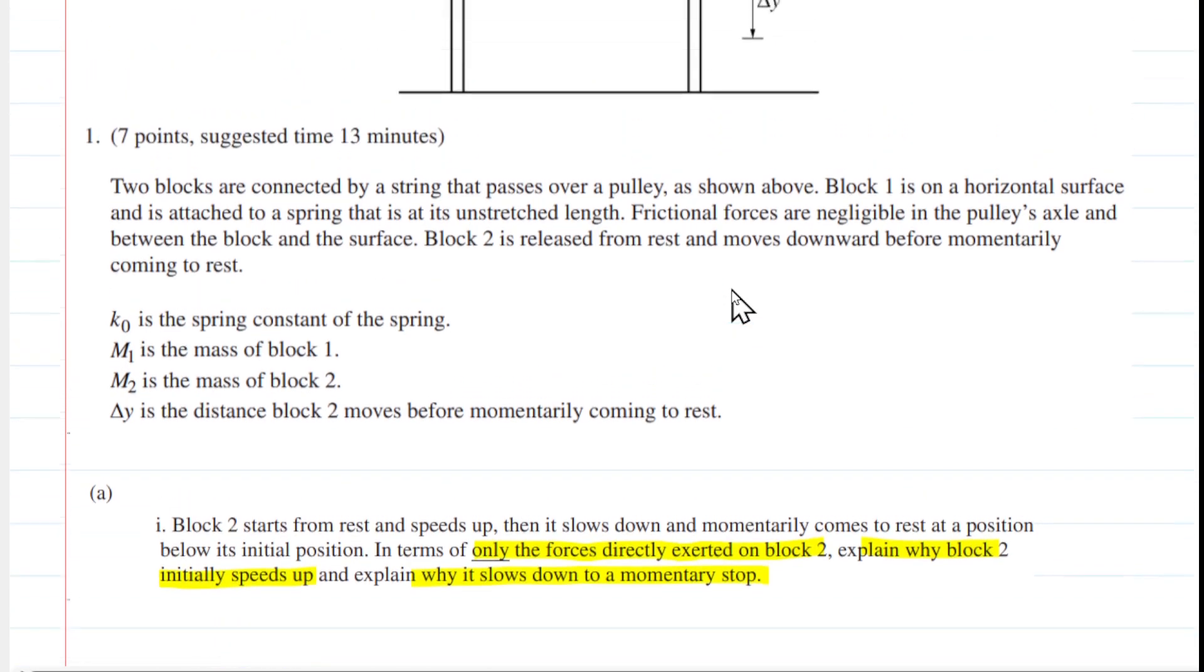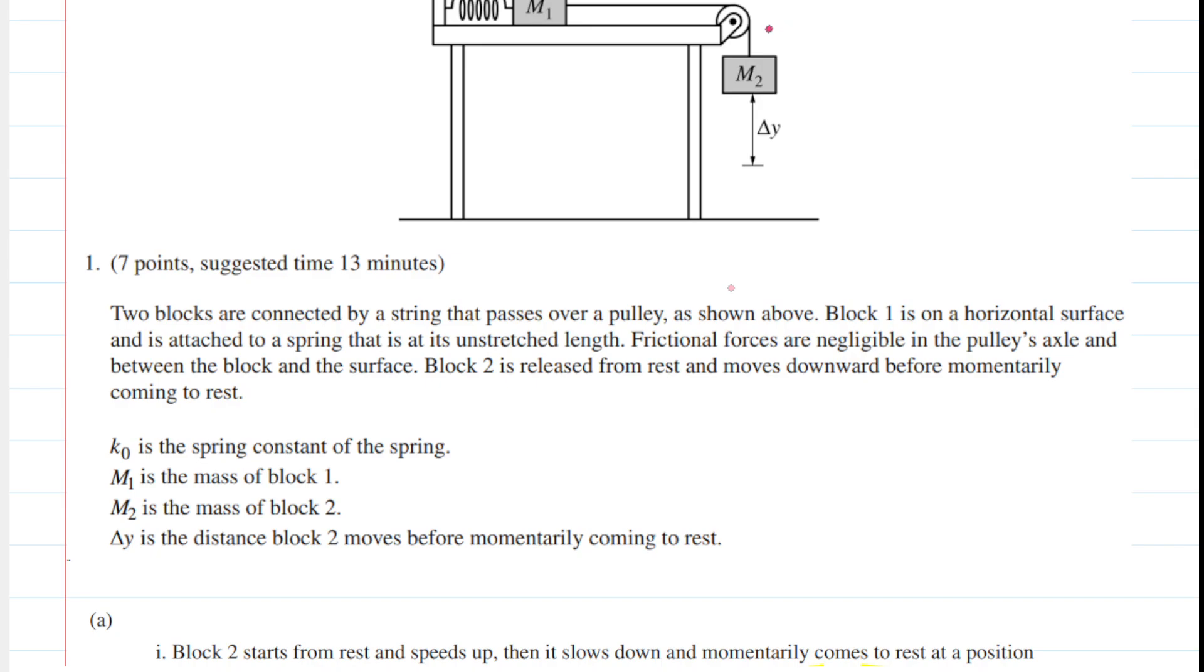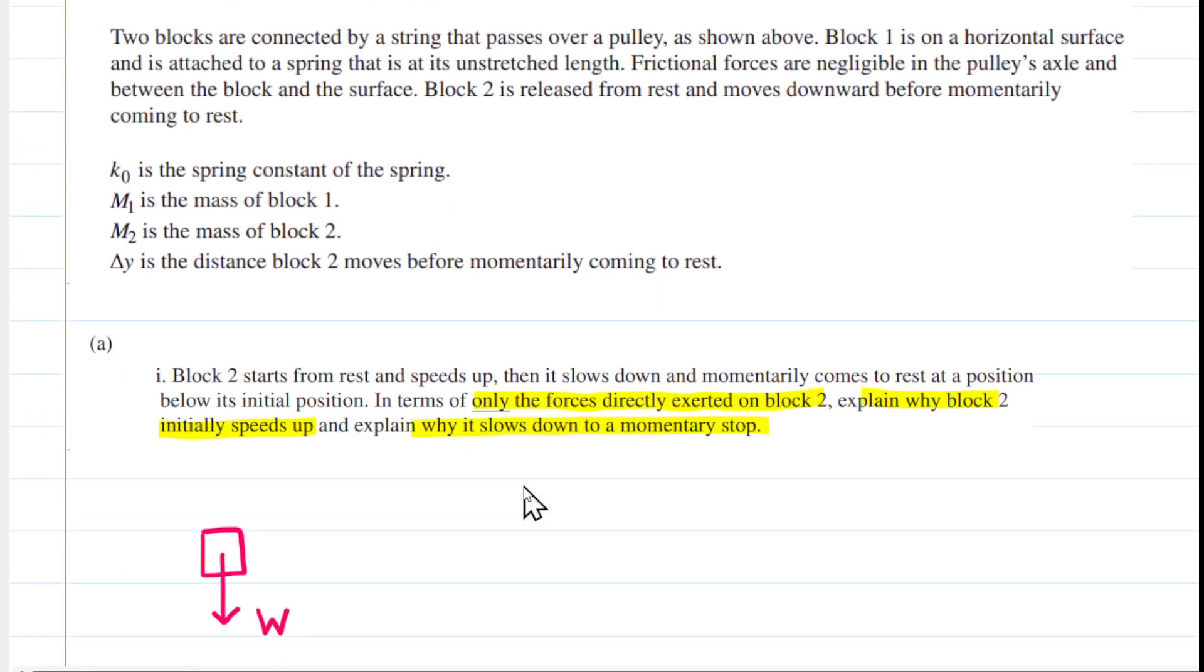And then if we scroll back up and look at the diagram, we can see that Block 2 is attached to that string right there. So there's going to be a tension force exerted by the string on Block 2, and that tension force would be directed upward. Now, these two forces are going to vary in magnitude during the motion of this block.